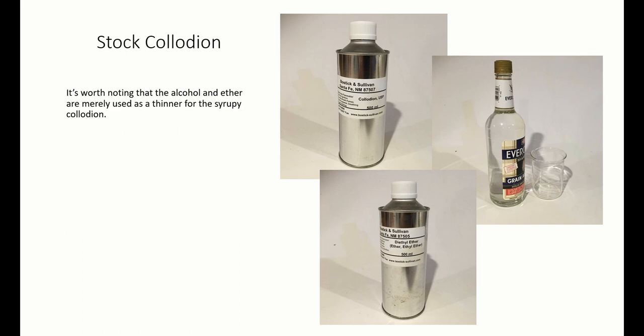It's worth noting that the alcohol and ether mixture is merely a thinner for the thicker collodion. If you monkey around with the proportions of alcohol and ether, you'll find that a higher percentage of ether will make the film tougher, but it shrinks more.